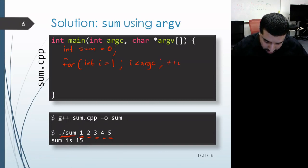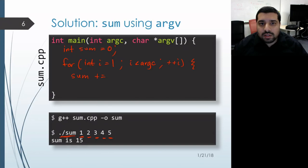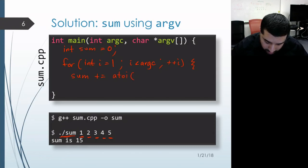In each iteration, we'll just call A2I on that particular argument and then add it to our sum. So call A2I on the ith command line argument.